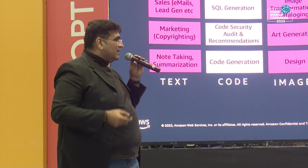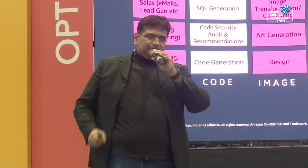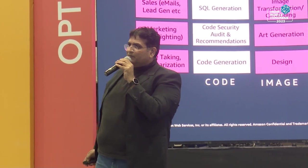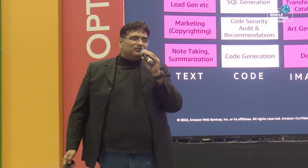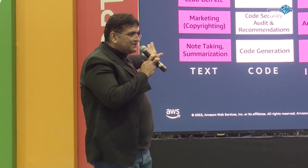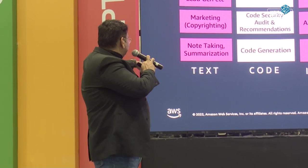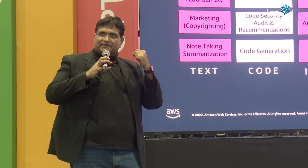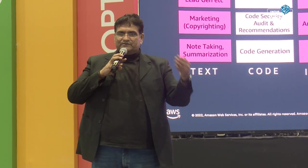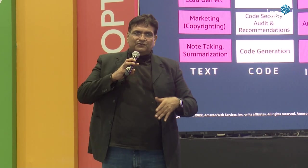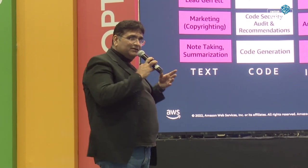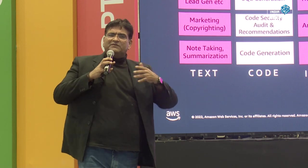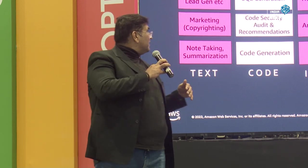Moving to key use cases - not a single domain is spared. Every domain is impacted by generative AI. On the text models side: text note-taking, meeting summarization - transcribe what's spoken and summarize, create action items. Marketing and copyright generation, email generation, chatbots - chatbots are the biggest use case - Q&A, and so on. And then code: Amazon has something called Code Whisperer, a coding companion. Write a comment and it generates the code for you in Python or any language.